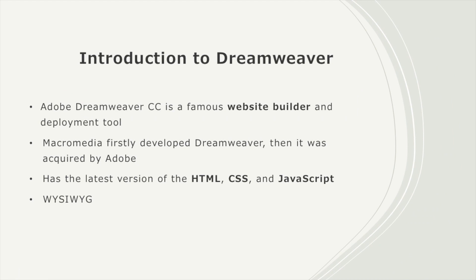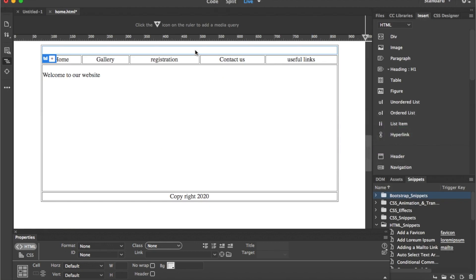Dreamweaver CC is one of the famous website builders and deployment tools. It has been developed for more than 20 years. It was first developed by Macromedia company and after that it was acquired by Adobe. It has the latest version of HTML5, CSS, and JavaScript. It also deals with the feature called 'What You See Is What You Get,' meaning you can drag, type, and do anything and everything shows to you immediately.